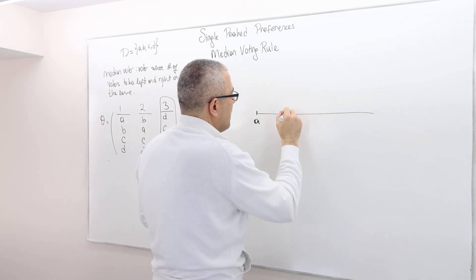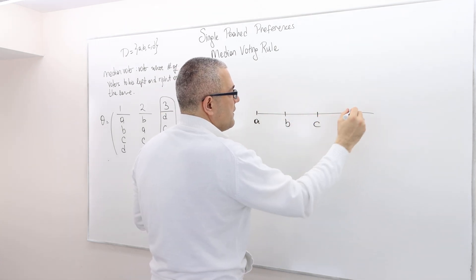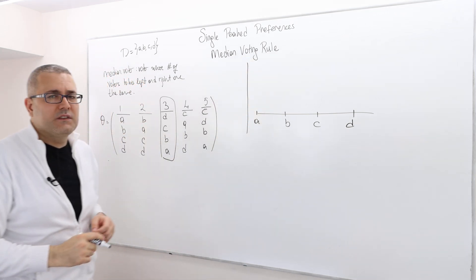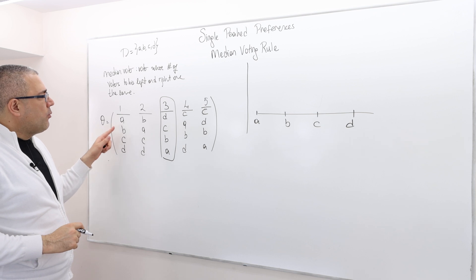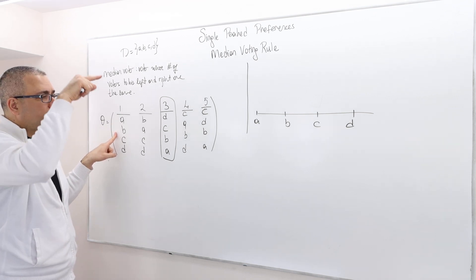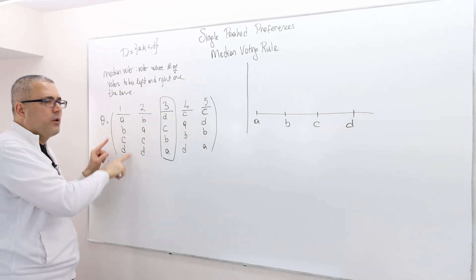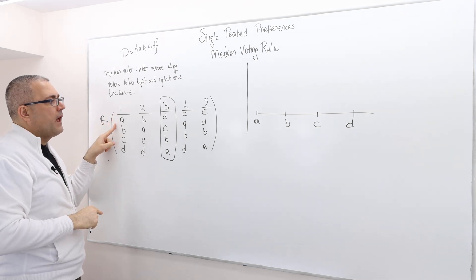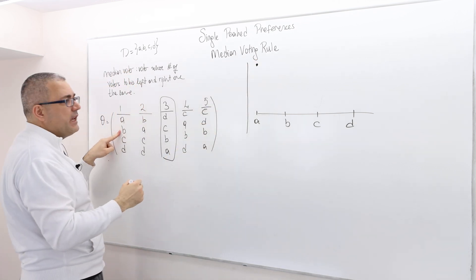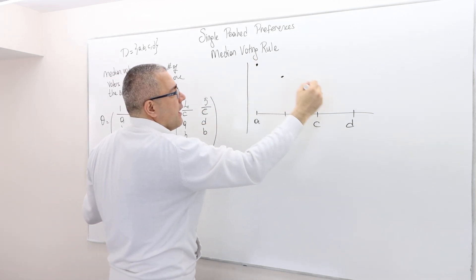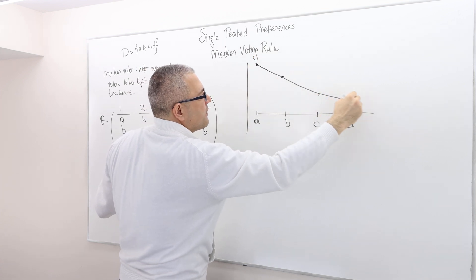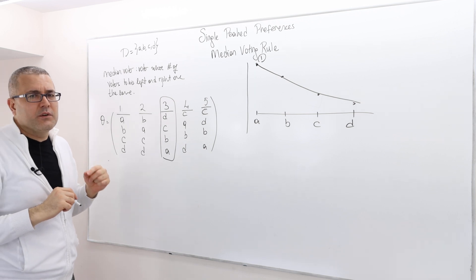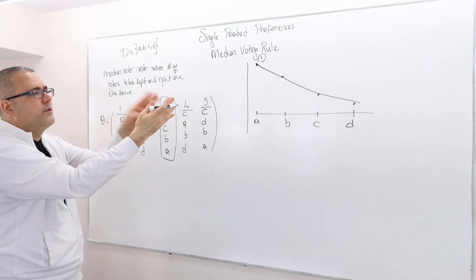So I'm going to line up the voters in terms of their peaks. Agent one has the peak A, then B, then C, then D — so his utility function is something like this. This is agent one. He's clearly not the median voter because there's no one to his left; everybody will be on his right. Agent two's peak is B, so B is his top choice, then A, then C, then D — so his utility function is something like this.